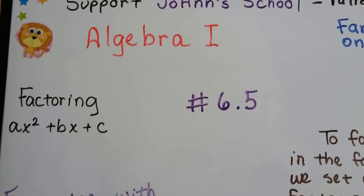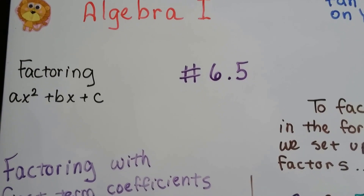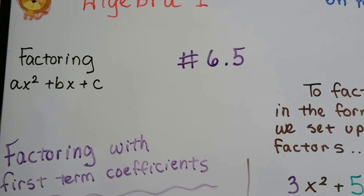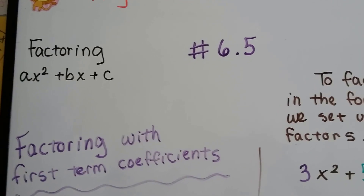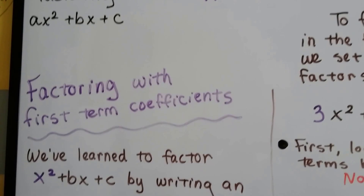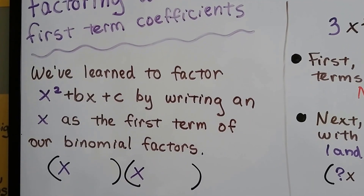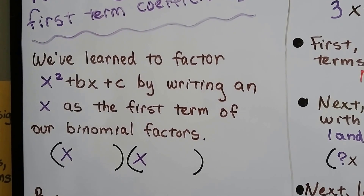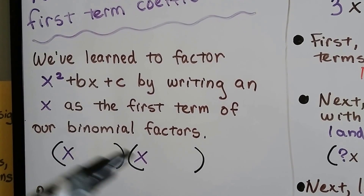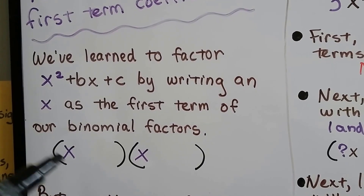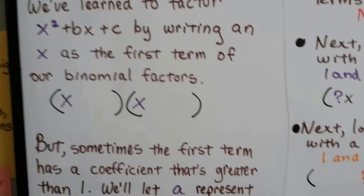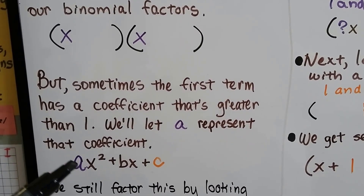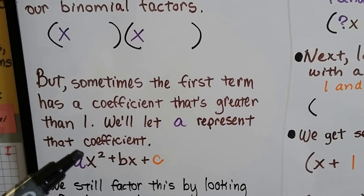Algebra 1, section 6.5. This is factoring with a first term coefficient. We've factored trinomials starting with x squared before, but what happens when it's in the form of ax squared? That means there's a number in front of it. Sometimes the first term has a coefficient greater than 1, and we'll let a represent that coefficient — so what if it's a 2, 4, or 6?